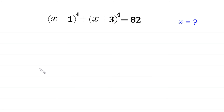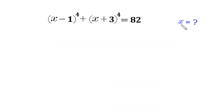Hello everyone, you are welcome to how to solve this very nice algebra equation. (x minus 1) whole to the power 4 plus (x plus 3) whole to the power 4 is equal to 82. We need to find all possible values of x.